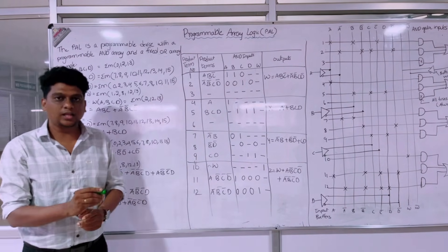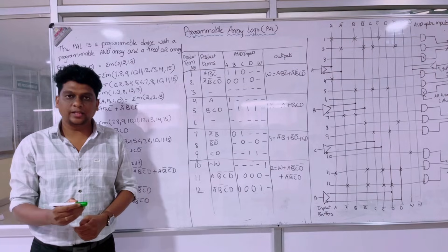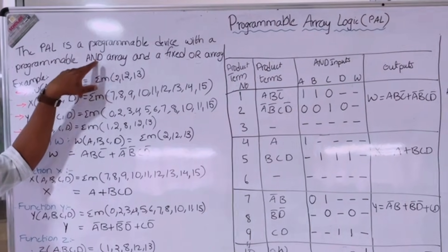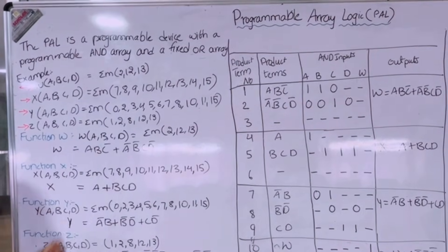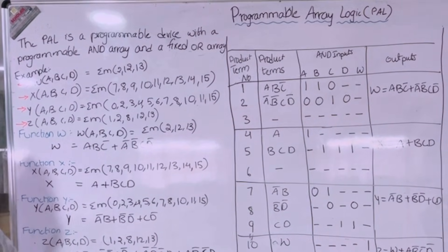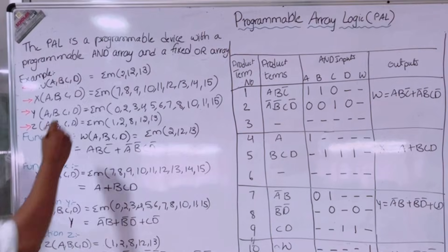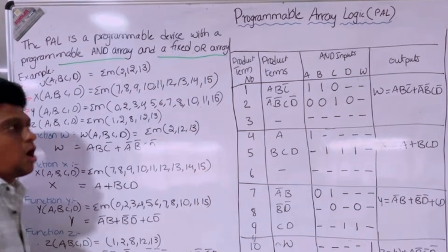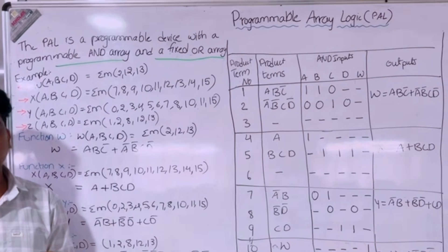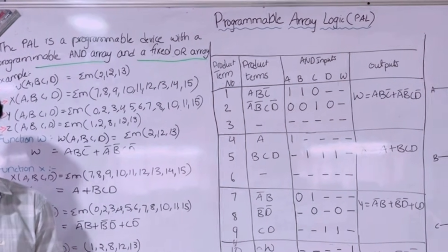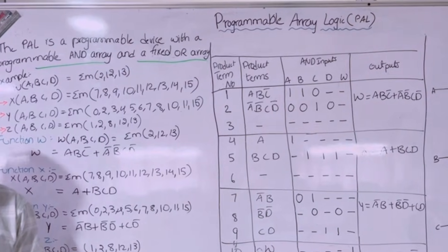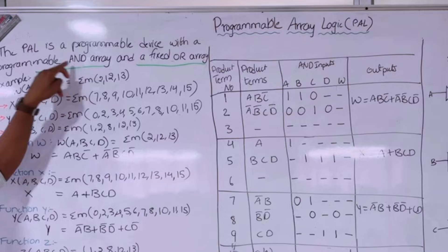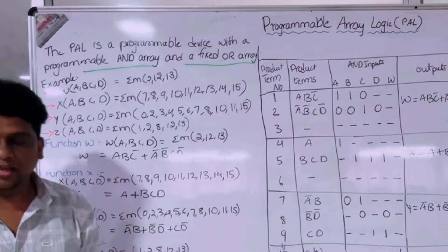PAL is a combinational logic device used to implement boolean functions in digital circuits. It is a device with a programmable AND array and a fixed OR array. In case of PLA, both the AND and OR arrays are programmable. Here, only the AND array is programmable and the OR array is a fixed array.